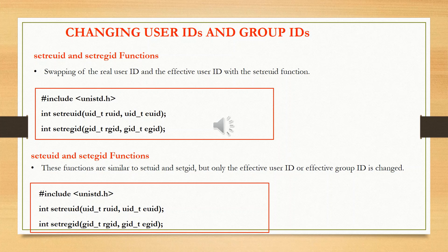For changing user IDs and group IDs, we also have the setreuid and setregid functions, which allow swapping of the real user ID and effective user ID. These two functions return an integer type value with different parameters: ruid and euid for setreuid, and rgid and egid for setregid.